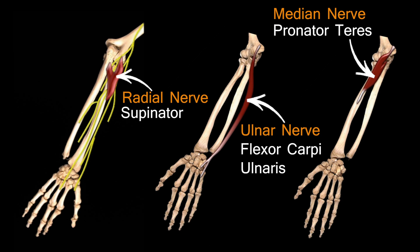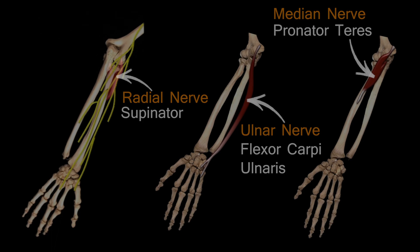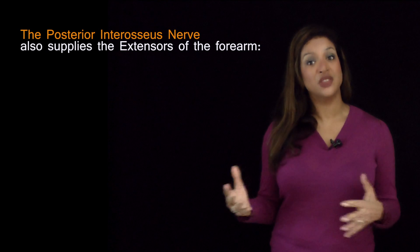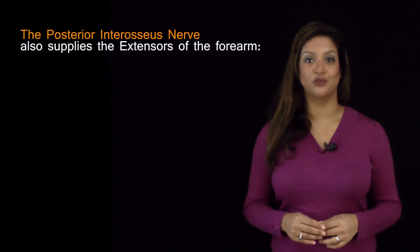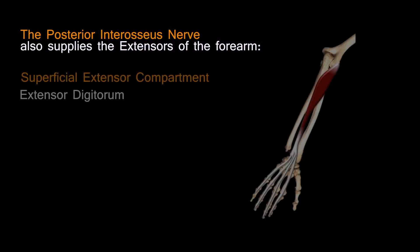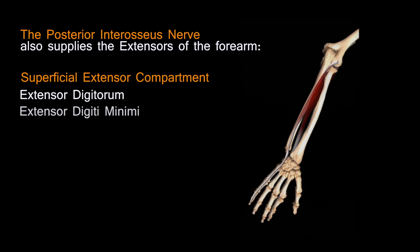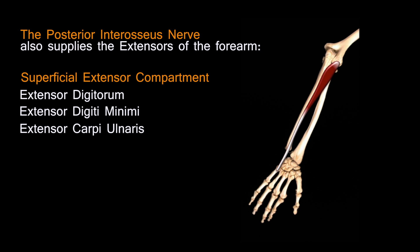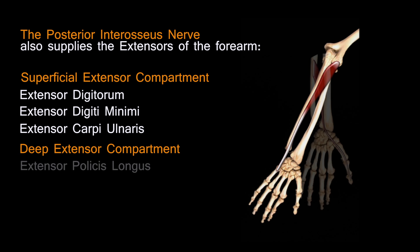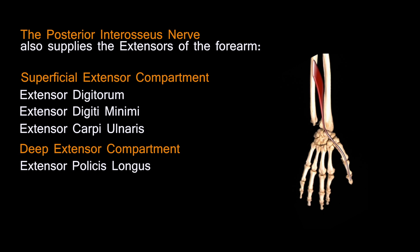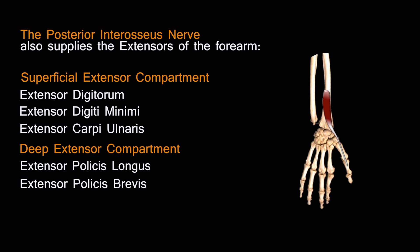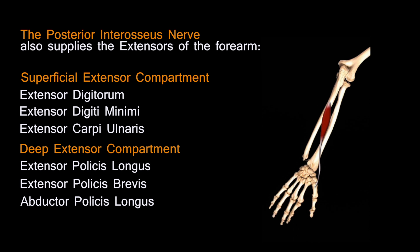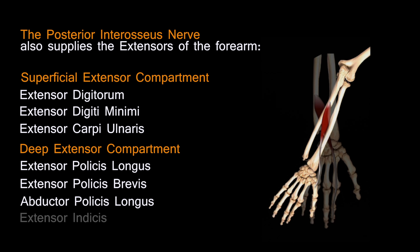The posterior interosseous nerve supplies supinator and all the other extensors in the forearm: extensor digitorum, extensor digiti minimi, extensor carpi ulnaris, and in the deep compartment, extensor pollicis longus, extensor pollicis brevis, abductor pollicis longus and extensor indicis.